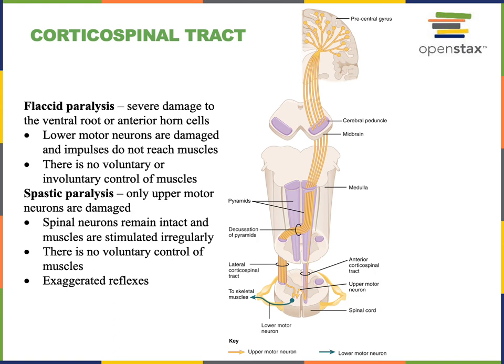Within the pyramids, these axons cross the midline so that the right hemisphere of the brain sends commands to control the left half of the body, and the left hemisphere sends commands to control the right half of the body.